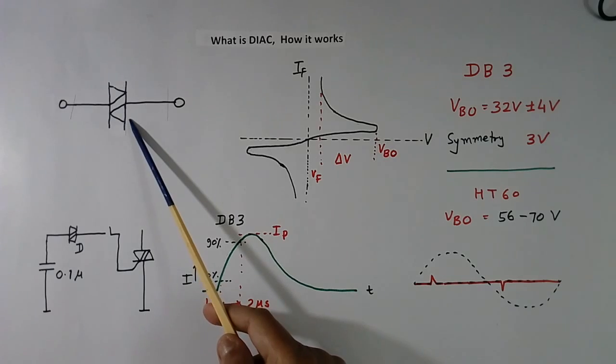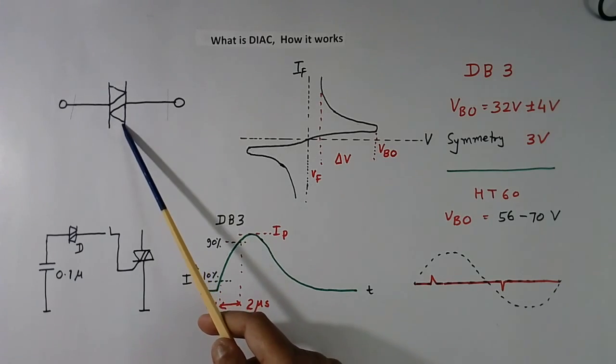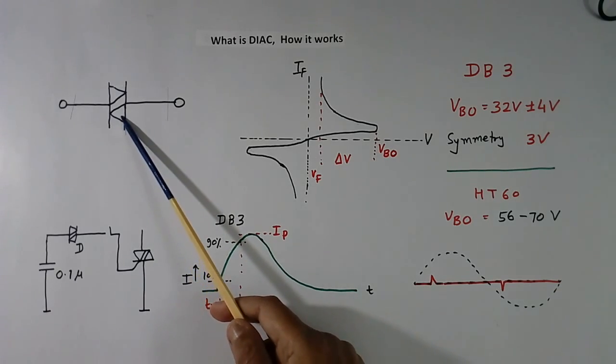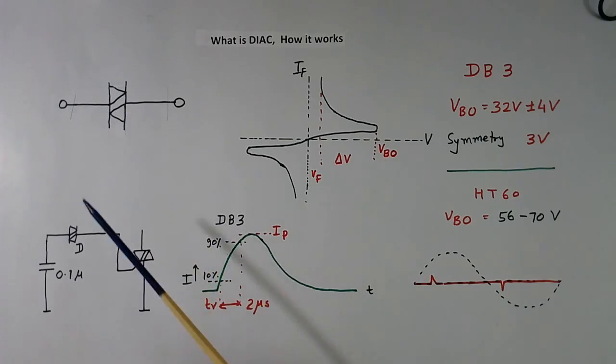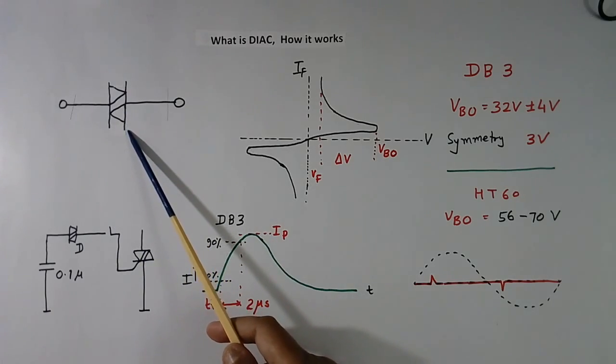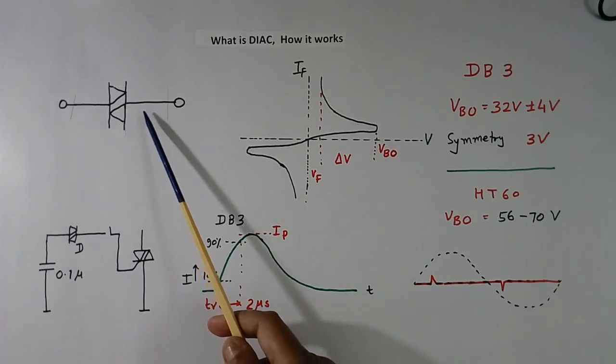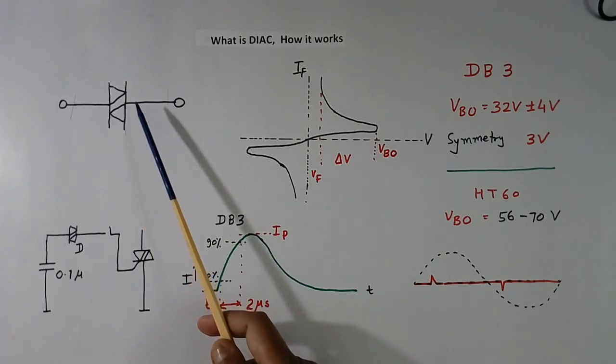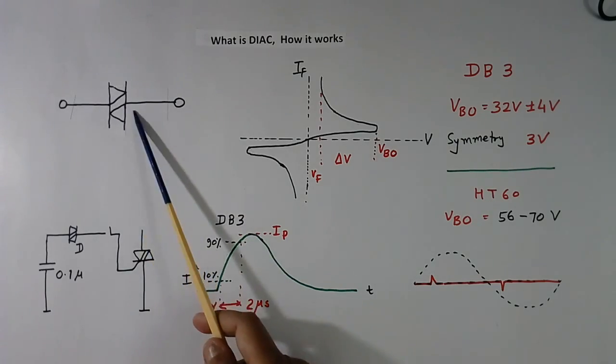This is the symbol of DIAG. DIAG is a full wave, bi-directional, semi-conductor switch that can be switched on or turned on both sides, forward and reverse.